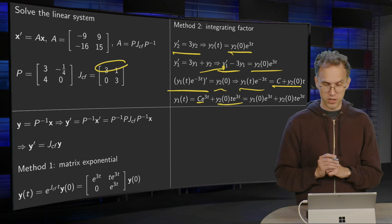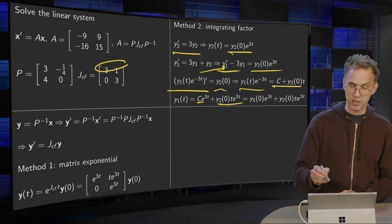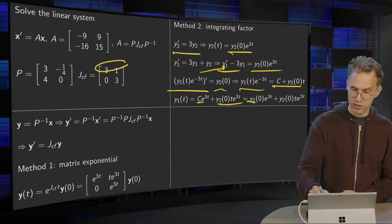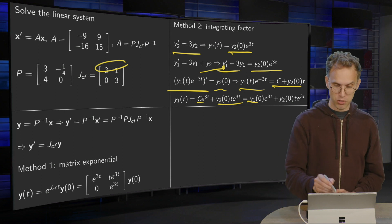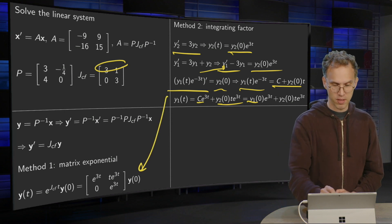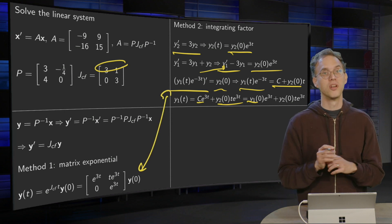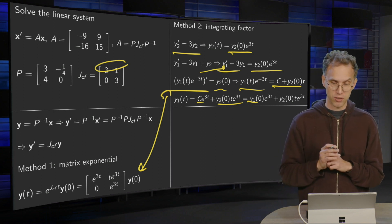And you see if you put in t equals 0 that your constant is in fact y1 of 0. And you have exactly the same solution that you have over here. So two methods to reach the same final solution.